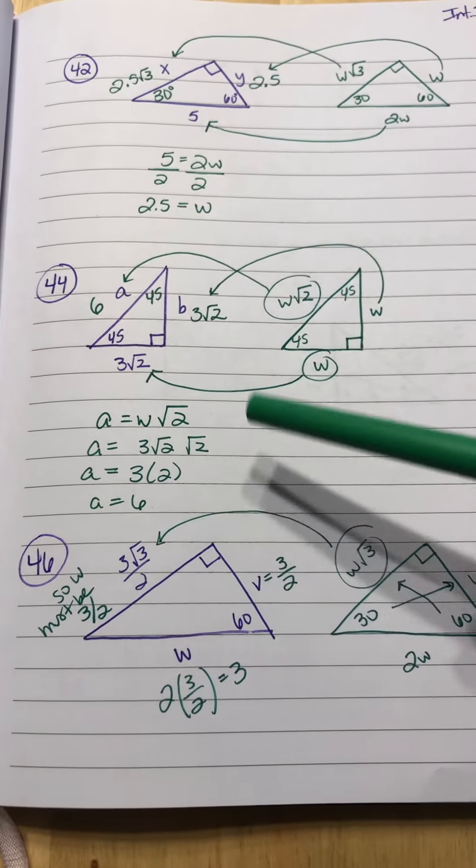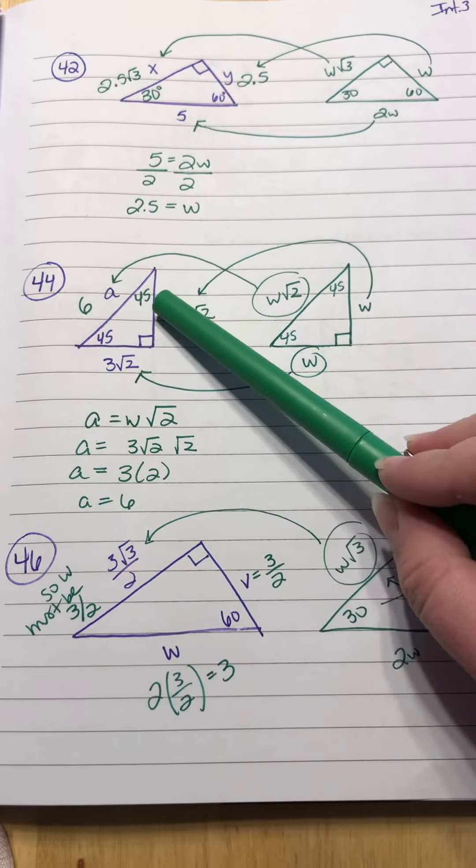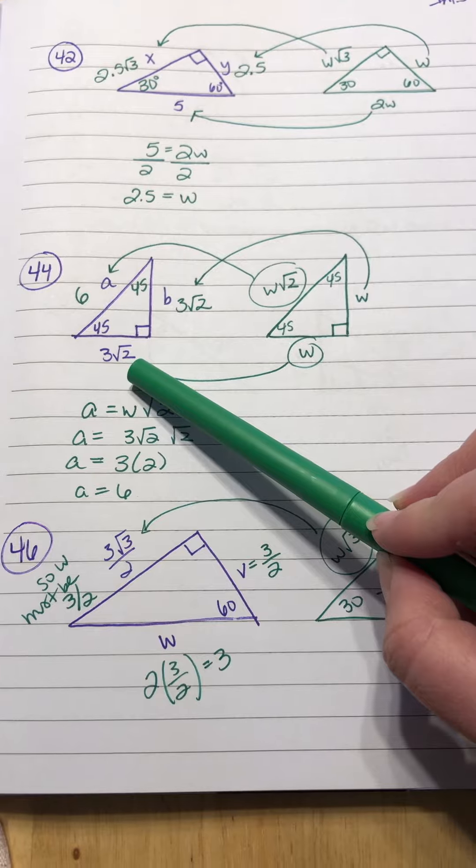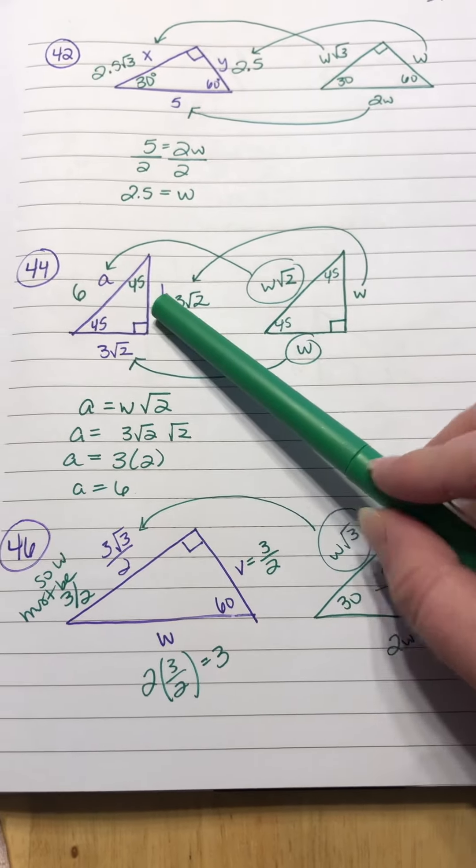At number 44, down here we have a 45-45-90 triangle, and they gave you a 3 square root of 2 side, and then A and B.